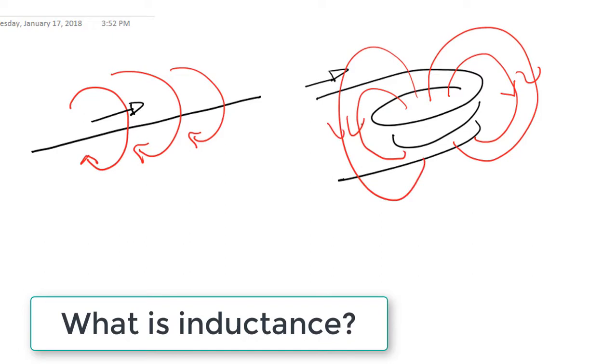So what we care for is not only about flux, but how many times that flux is linking the circuit. That's why we have defined, instead of flux, we have defined flux linkages. That is, how many times the flux links the circuit. That is important within the context of Faraday's law.